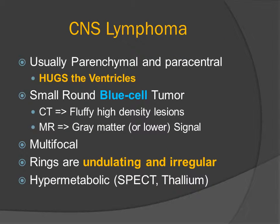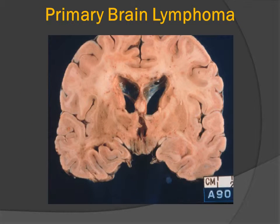CNS lymphoma is usually parenchymal, paracentral, hugging the ventricles. It's a small, round, blue cell tumor. It can be multifocal. When it creates a ring-enhancing lesion, the rings may be irregular and have a wavy or undulating margin. We can also do special metabolic studies, including SPECT, thallium, and FDG studies, in order to demonstrate the increased metabolism of this neoplastic process.